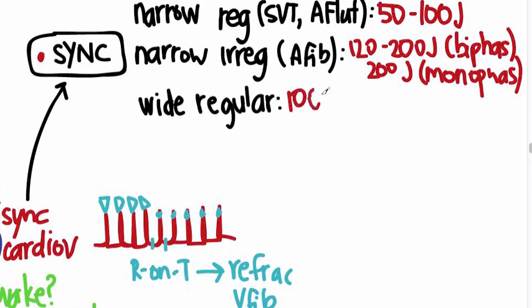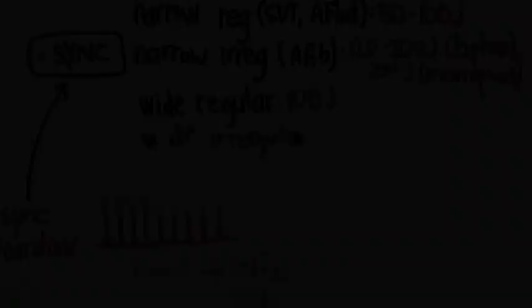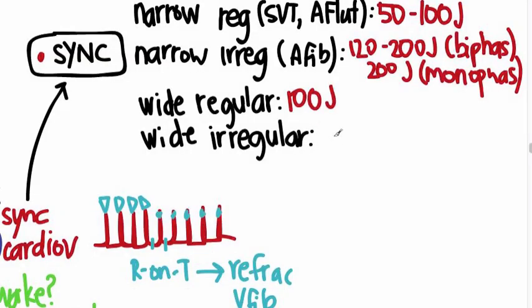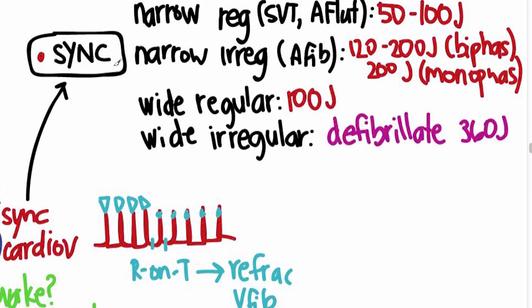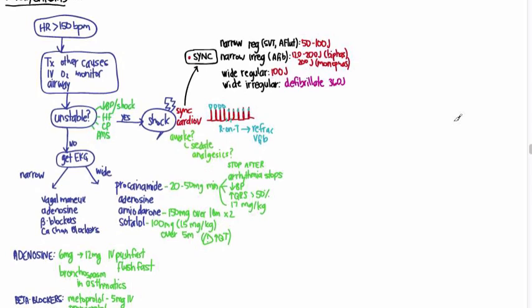If it's wide and regular, you can go for 100 joules, and if that doesn't work, of course you could go up from there. And if it's wide and irregular, just defibrillate: turn off the sync mode, crank it up to 360, and shock them.